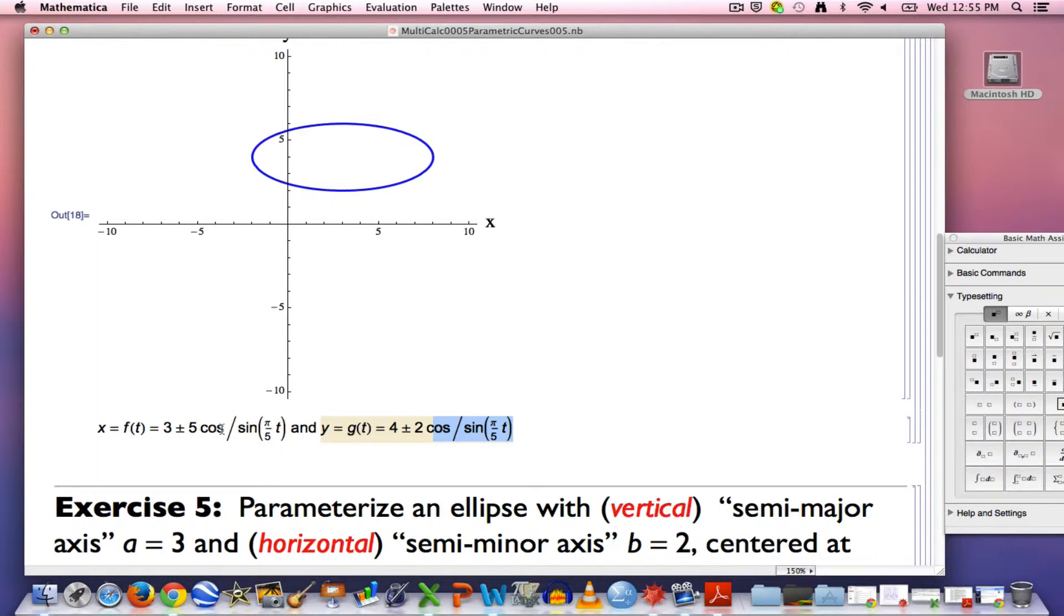Now we need to pick which ones of these here. So again, we're starting at the point 3 comma 2 at the bottom here and we're going clockwise. In other words, y is starting at its minimum value and x is starting at its middle or average value. If you think about that, that means for x we need to use a sine and for the y we need to use a cosine.